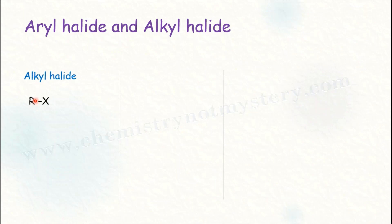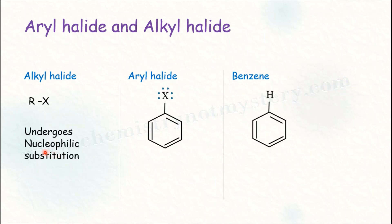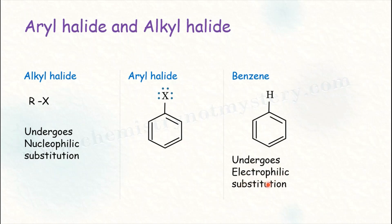When halogen is attached to an alkyl group, it becomes alkyl halide. This is benzene. When hydrogen of benzene is substituted with halogen, it becomes aryl halide. Alkyl halide undergoes nucleophilic substitution reactions while benzene undergoes electrophilic substitution reaction.